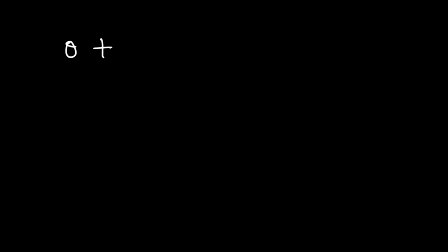So anytime you need to find a coterminal angle, all you need to do is add or subtract by 360. Now if your angle is in radians, you can add or subtract by 2 pi. Now let's work on some examples.